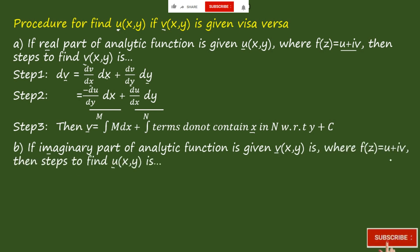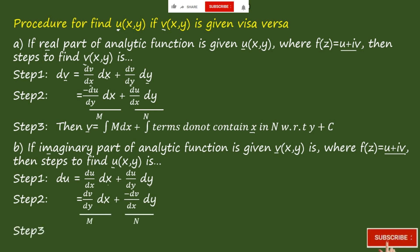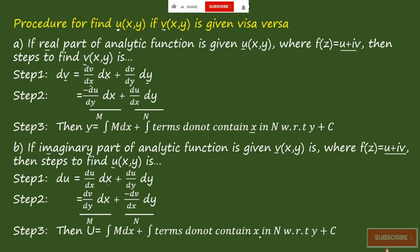For Case 2, if the imaginary part v is given and we want to find u: Step 1: du = (du/dx)dx + (du/dy)dy. Step 2: apply the CR equation — replace du/dx with dv/dy and du/dy with −dv/dx. Calling these terms M and N, Step 3: u = ∫M dx + ∫N (terms not containing x with respect to y) dy + C, giving us the real part of the analytic function.